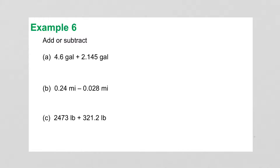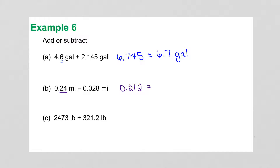More examples: adding 4.6 gallons to 2.145 gallons gives 6.745, but because the first number is only precise to one-tenth of a gallon, we round to 6.7 gallons. Subtracting 0.028 miles from 0.24 miles gives 0.212, but since the first number only goes to the hundredths place, the answer can only go to the hundredths place: 0.21 miles.